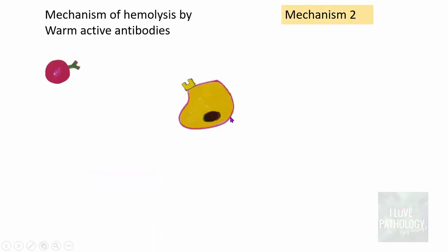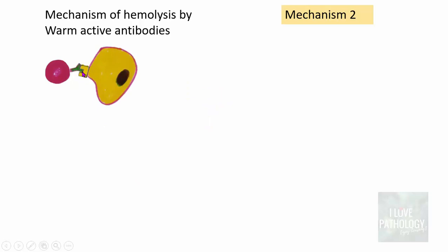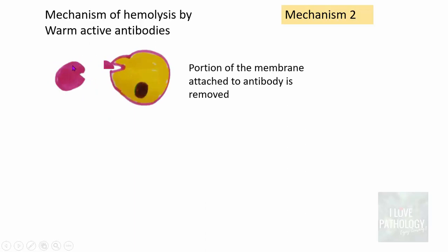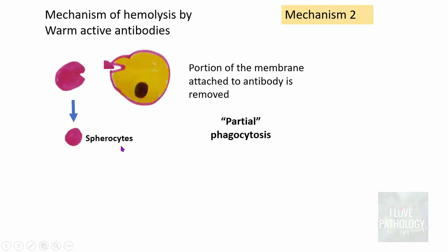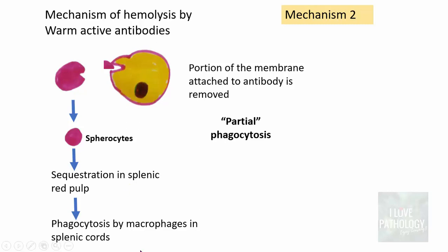In the second mechanism, the same RBC–antibody attachment occurs, but instead of engulfing the entire RBC, the macrophage removes only the portion of membrane where the antibody is attached — essentially biting that part off. This results in loss of RBC membrane and is referred to as partial phagocytosis, in contrast to complete phagocytosis. Because of this membrane loss, RBCs are transformed into spherocytes, which are then sequestered in the splenic red pulp and phagocytosed by macrophages in the splenic cords.